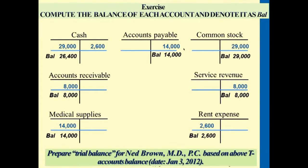Did anybody figure out the balance for debits and credits? One student answered $51,000, another answered $53,600. The correct answer is $53,600 for both sides — debits and credits. Let's go over this together.